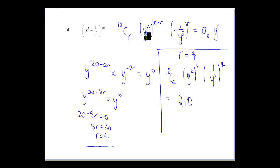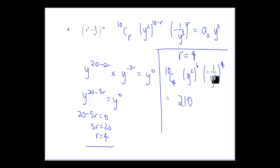So when r equals 4, we get 10C4 times y to the power of 2 times (10 minus 4), giving y to the power of 12, and dividing by y to the power of 12 as well. So the y's cancel when r equals 4. It's really just 10C4, and since (minus 1) to the power of 4 is 1, that gives us our answer. That's the formal way to do a question like that to make sure we get the correct value.